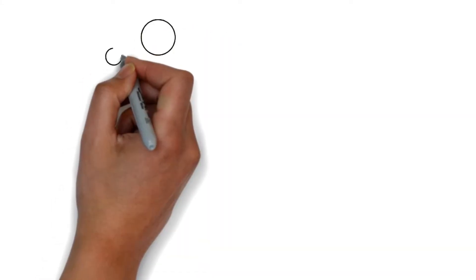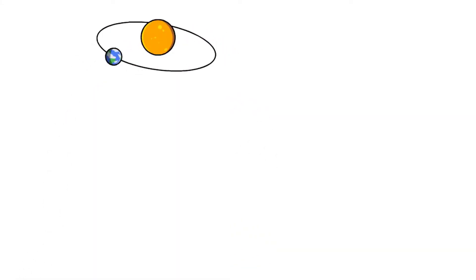In simple words, if an object in space revolves around a star, we call it a planet, and if it revolves around a planet, then we call it a satellite.